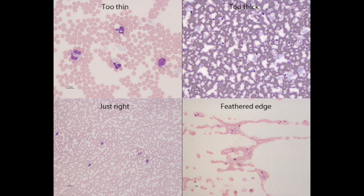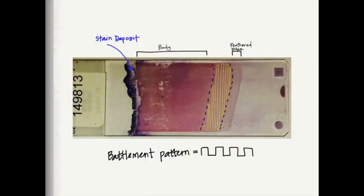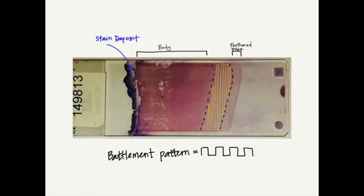Lastly, the lower right corner in the feathered edge is pretty easy to tell when you're there. There's some important morphology that you need to be able to look at out there including platelet clumps or larger cells. So again, as you look at your slide macroscopically you'll want to be able to identify the area that will be best suited to count and differentiate your cells and platelets.